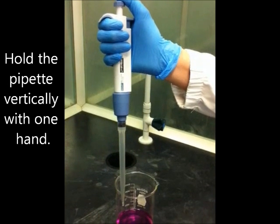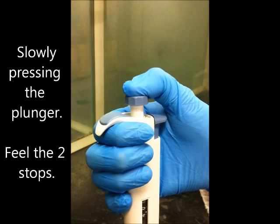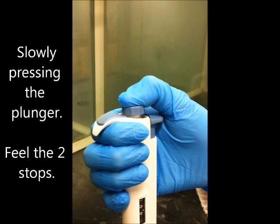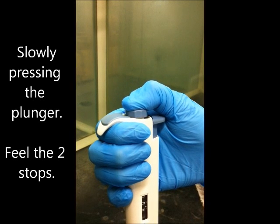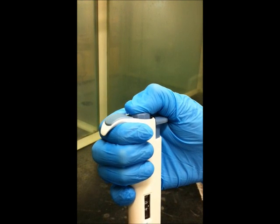hold the pipette vertically with one hand. Slowly apply pressure at the plunger. You should feel the two stops: the first stop and the second stop.